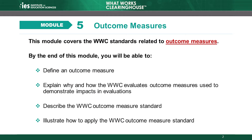According to WWC standards, the outcome measures a study uses must meet certain requirements. Outcome measures are used to assess the effect of an intervention, and it is important that outcome measures are appropriate, valid, and reliable. In this module, we will discuss the WWC standards related to outcome measures. We will cover the WWC definition of an outcome measure and explain why and how the WWC evaluates the outcome measures used to demonstrate impacts in studies.